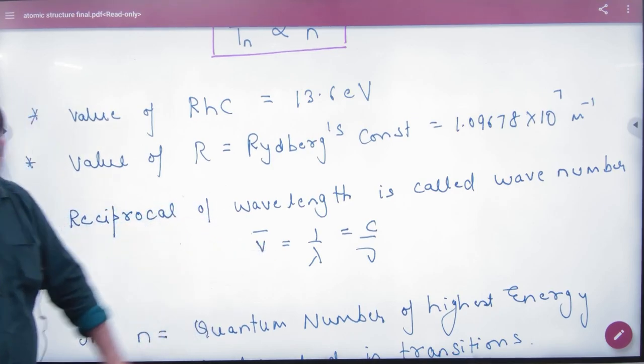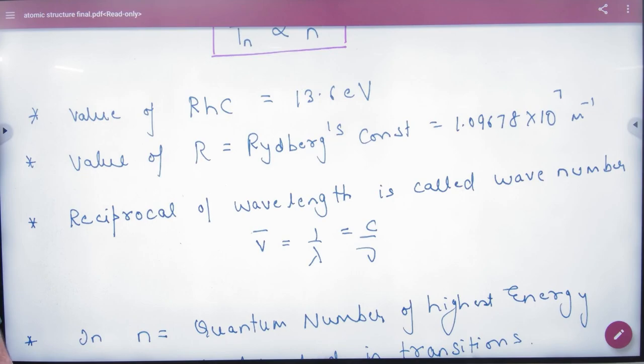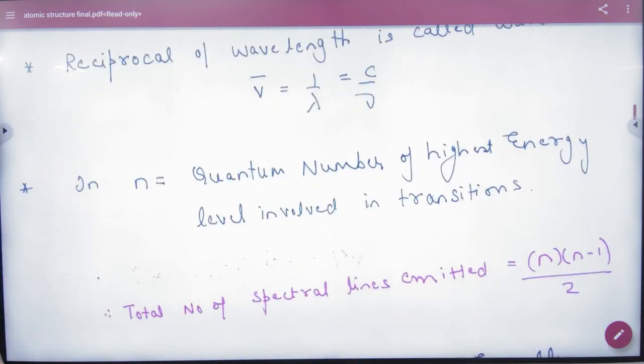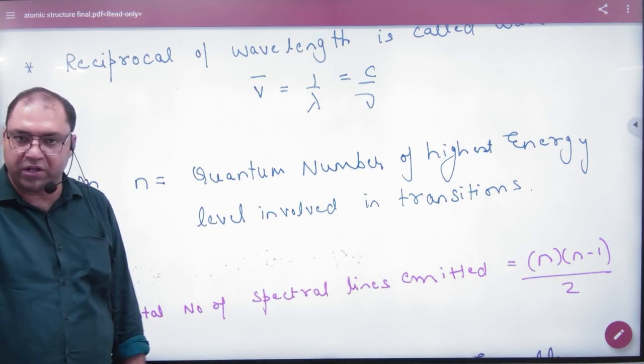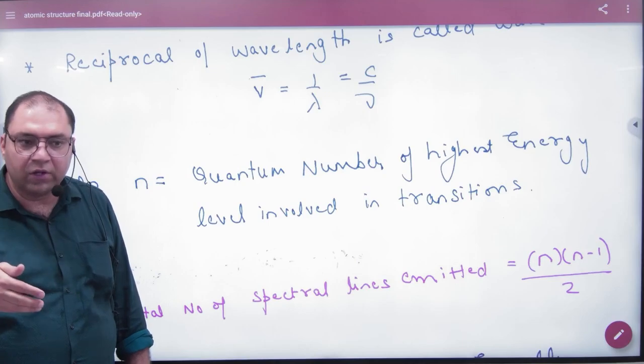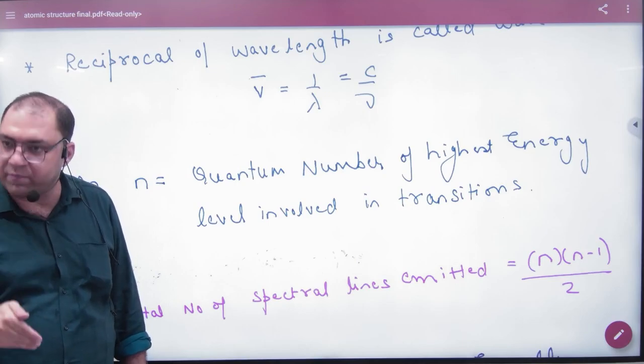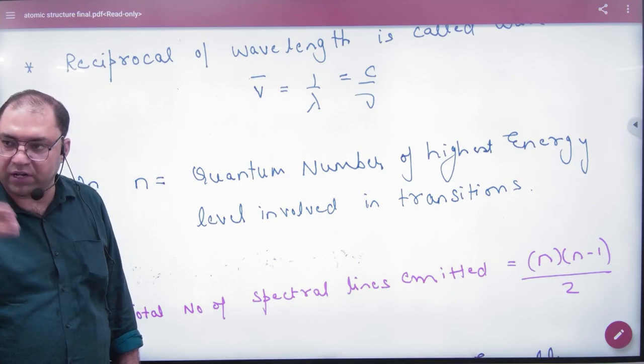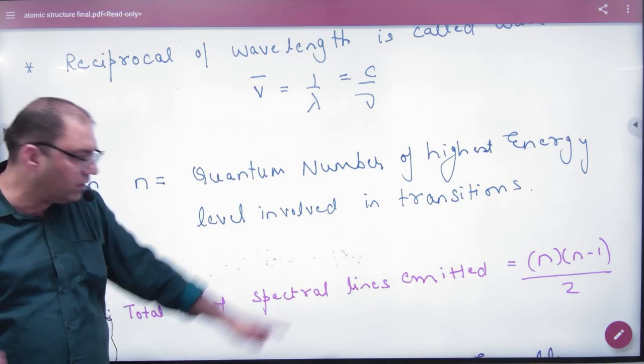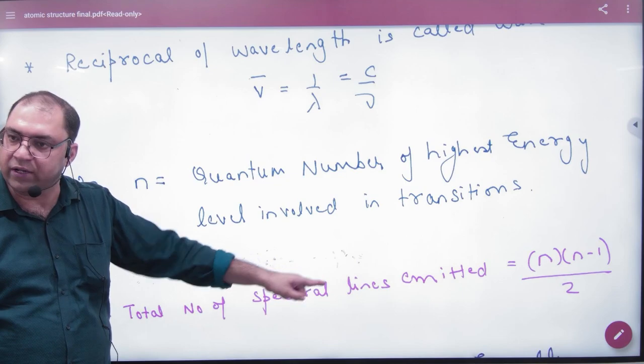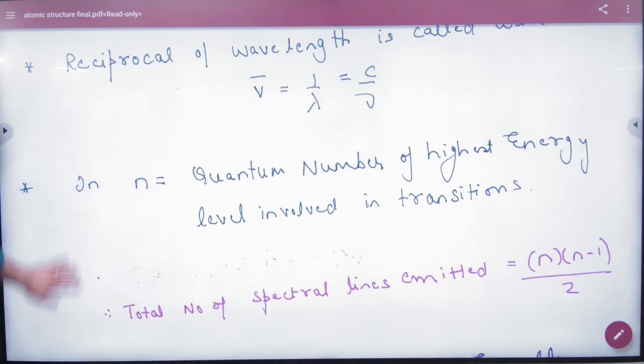We call the reciprocal of wavelength the wave number. If n is the quantum number of the highest energy level involved in a transition, when the electron falls from one shell to another shell, like from 3 to 1, 3 to 2, 2 to 1, the total number of spectral lines emitted is n(n-1)/2. Famous formula.